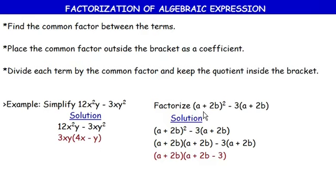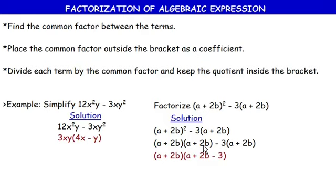Let's now look at this question: factorize (a + 2b)² − 3(a + 2b). We expand (a + 2b)² as (a + 2b)(a + 2b), then attach the second expression: minus 3(a + 2b). We now have two terms — the first is (a+2b)(a+2b), which is one term since multiplication doesn't separate terms.